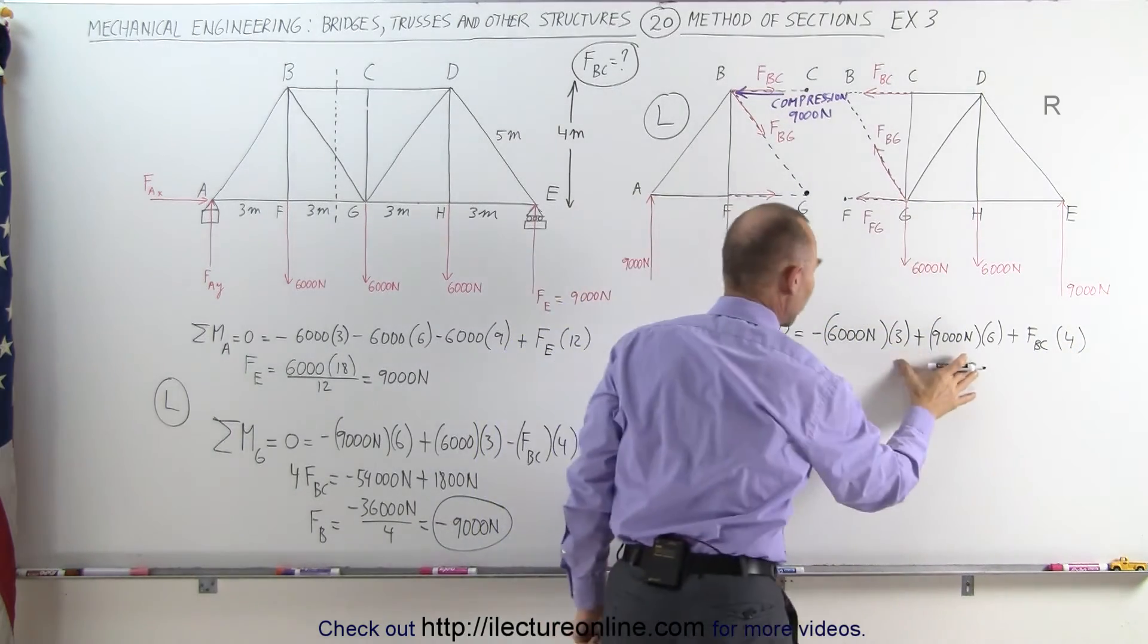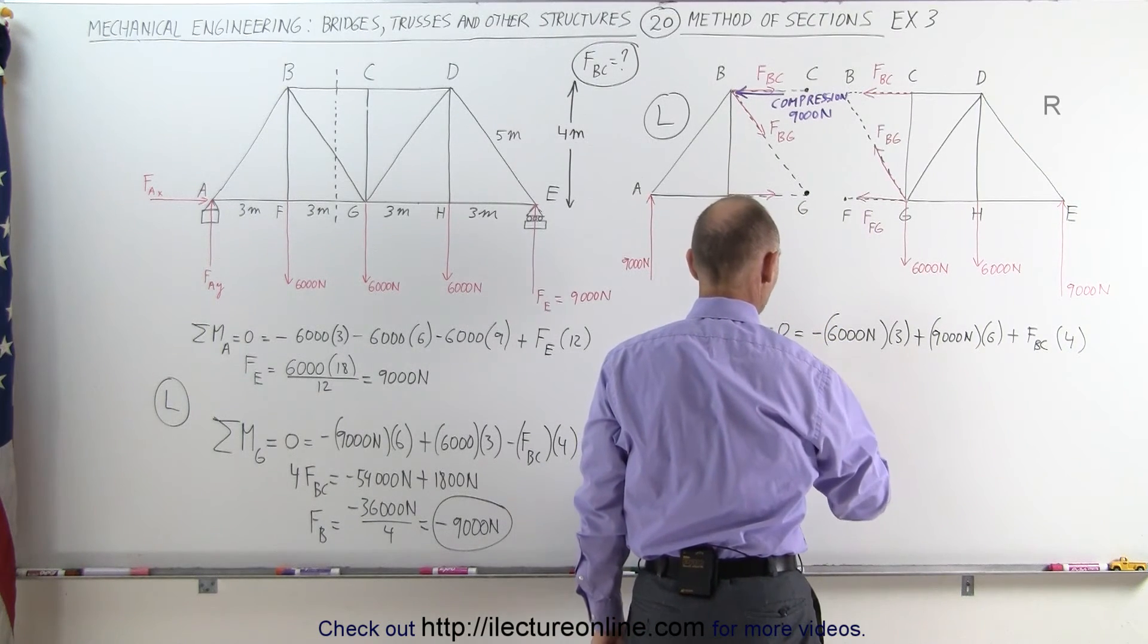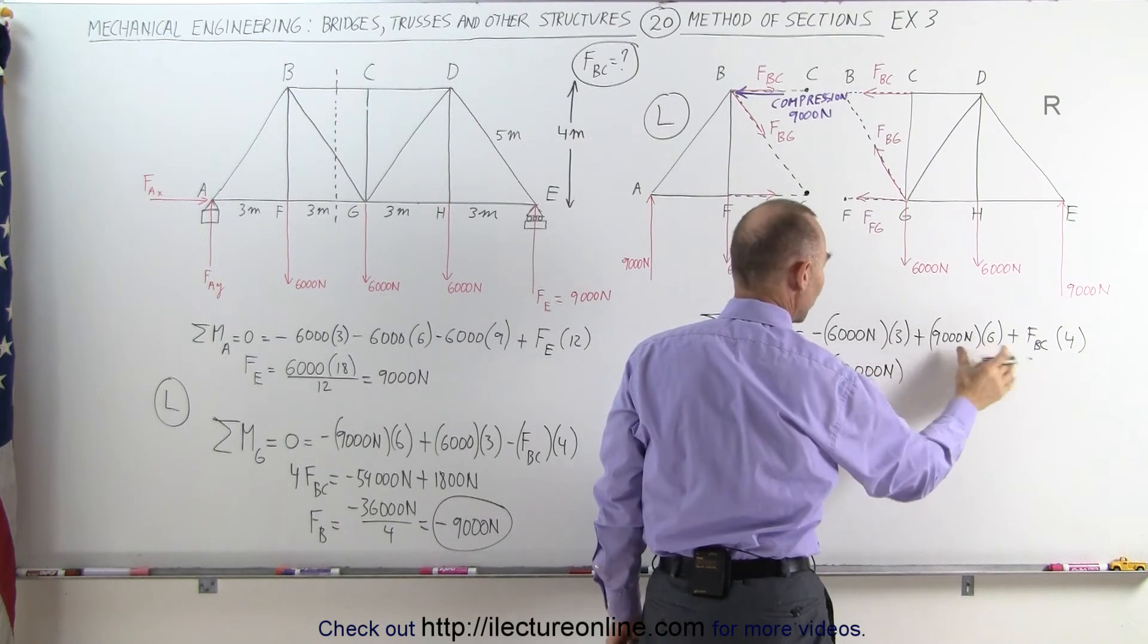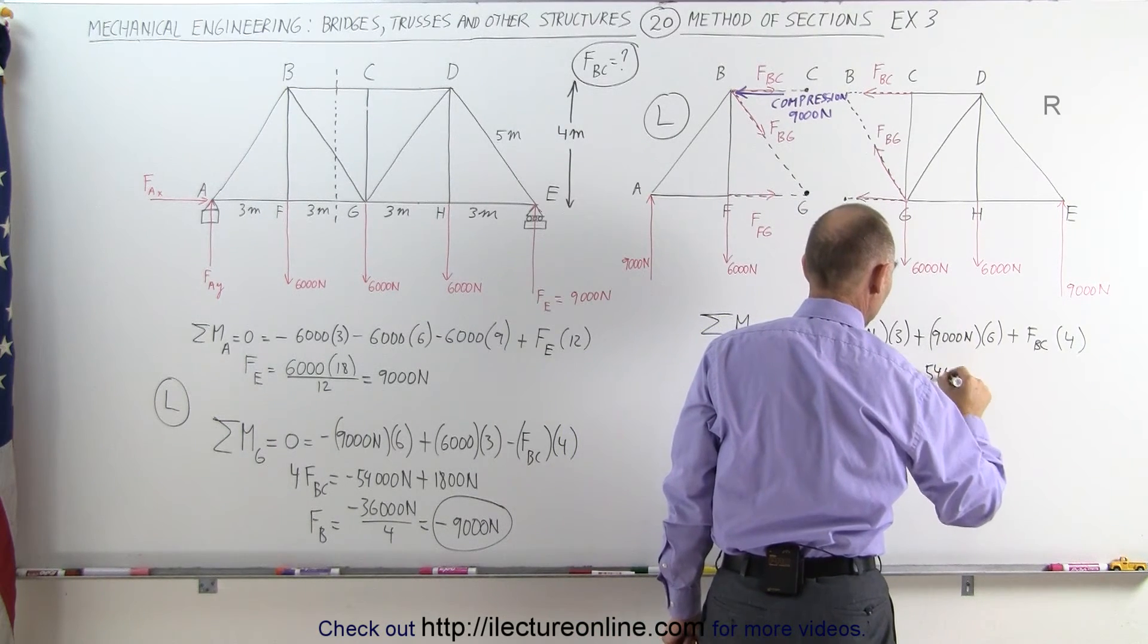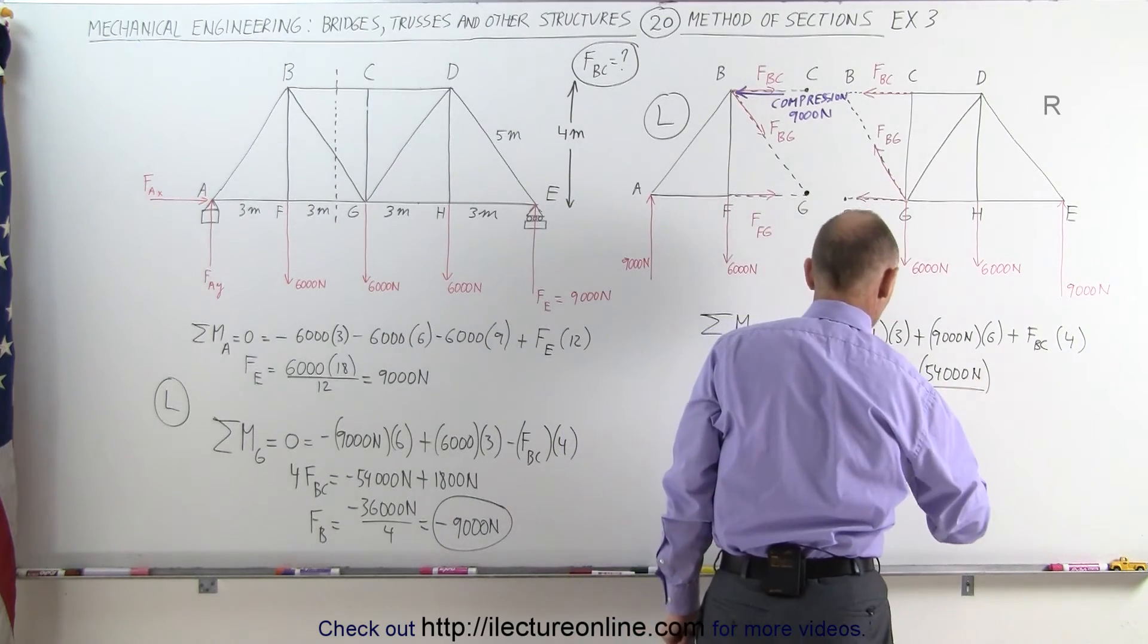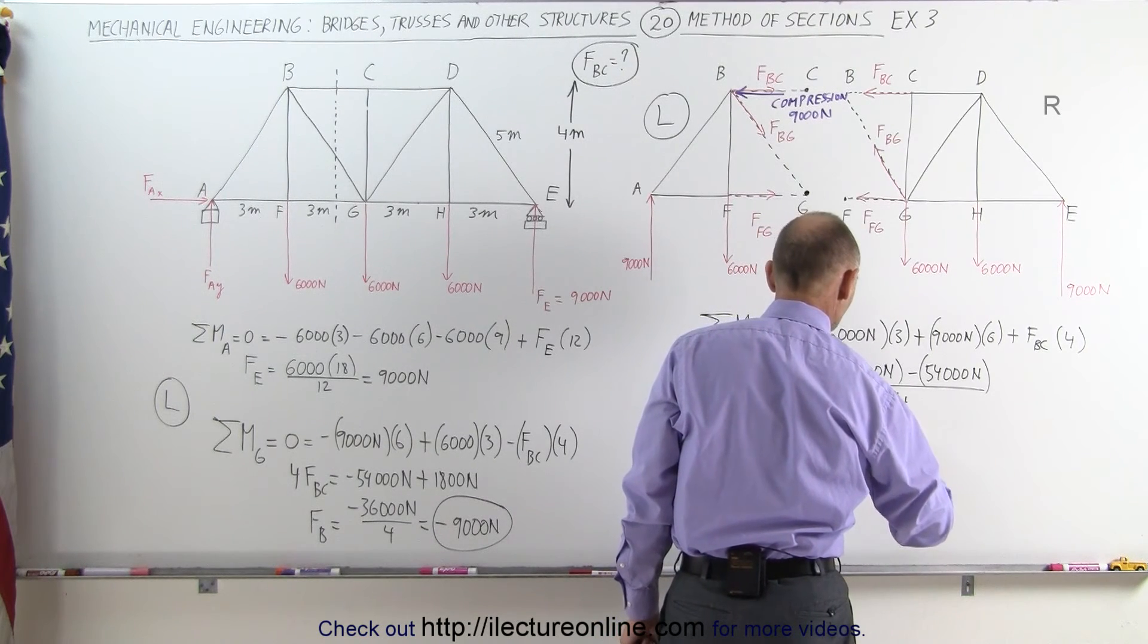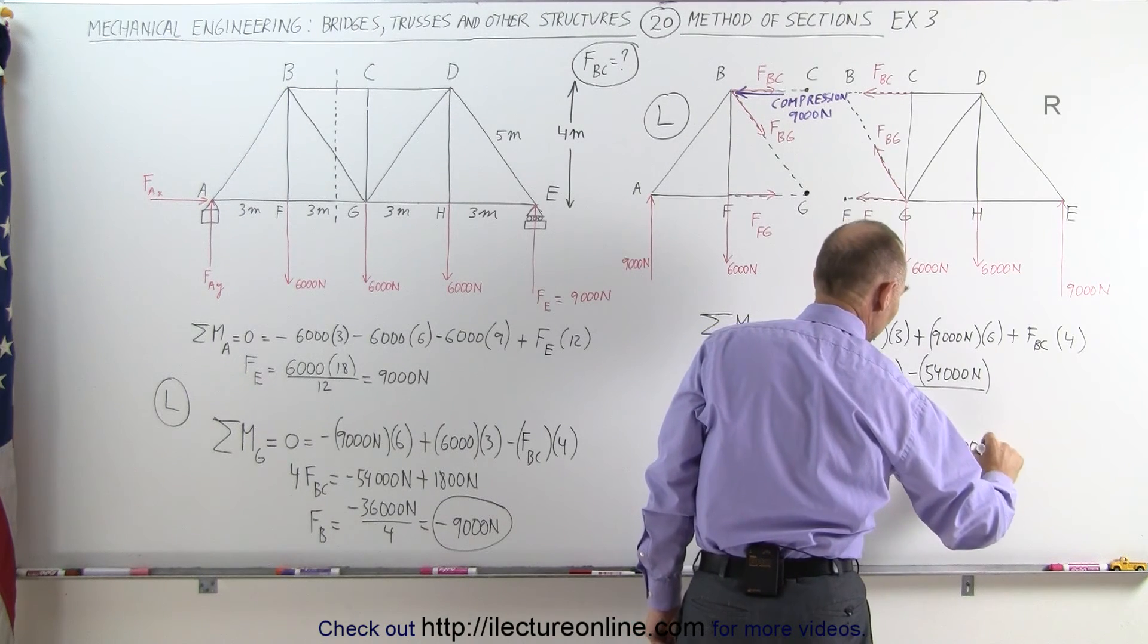Which means I can move everything over to the other side, solve for this, we get 4FBC is equal to, moving this across, that becomes a positive 18,000 Newtons. And then moving this across, 6 times 9 is 54, that would be minus 54,000 Newtons. And then dividing both sides by 4, I get the force BC is equal to minus 36,000 Newtons divided by 4, which is minus 9,000 Newtons.